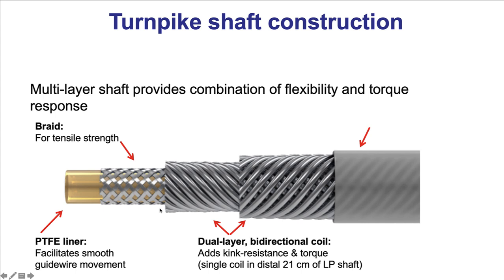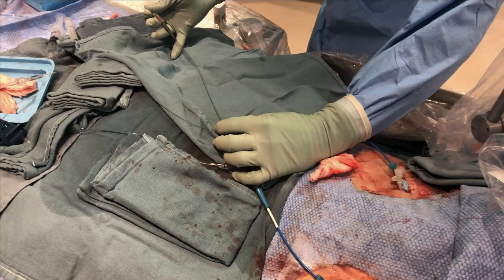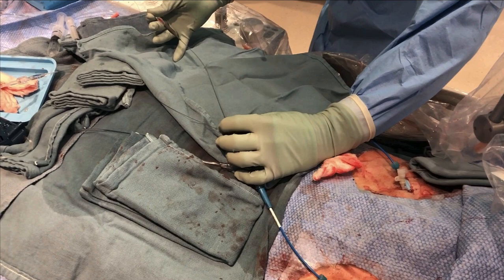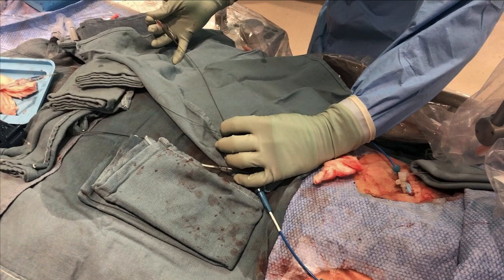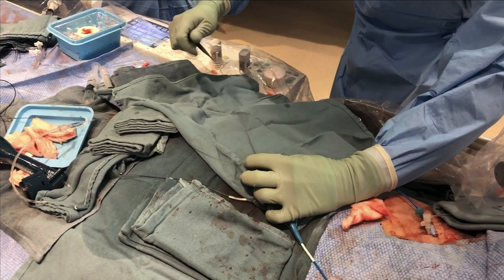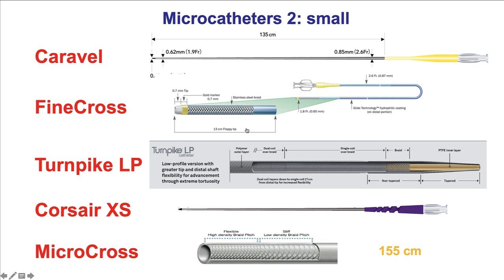The Turnpike has three layers: a braid and two coils that are bidirectional. When the microcatheter is rotated — clockwise is the preferred rotation direction for the Turnpike — the outer coil tries to contract and the inner coil tries to expand, locking with each other and facilitating transmission of torque from the back end to the front end. To advance a microcatheter, one way is by fixing the guide wire and pushing the microcatheter; another way, feasible with the large microcatheters, is by rotating both the back end and the more proximal portion.